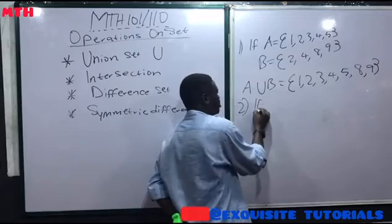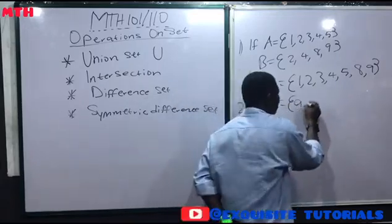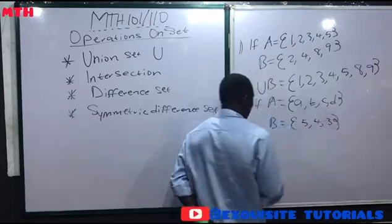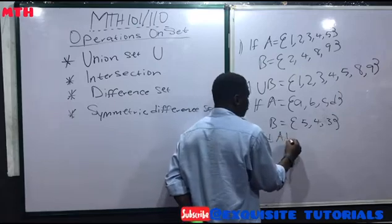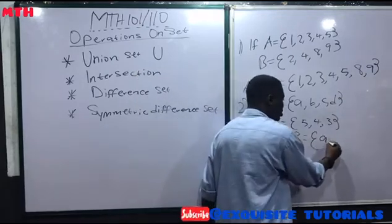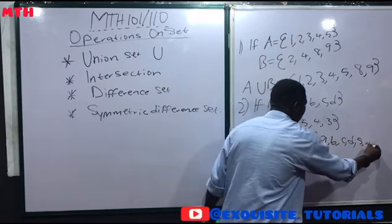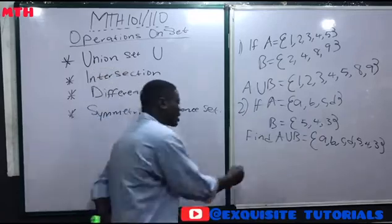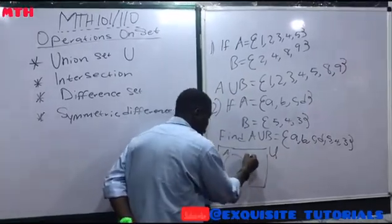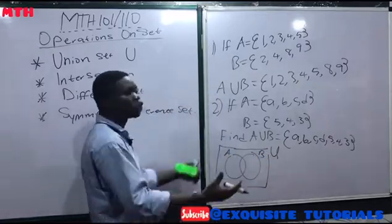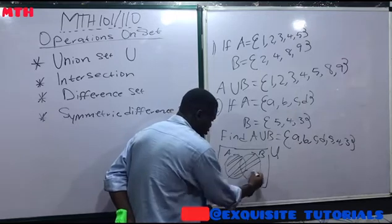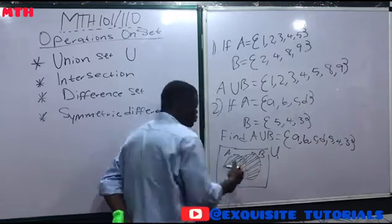Another example: if A = {a, b, c, d} and B = {5, 4, 3}, find A ∪ B. The union is adding all elements to make a new set. So A ∪ B = {a, b, c, d, 5, 4, 3}. In a Venn diagram, the union of two sets is represented by the fully shaded region of both circles inside the universal set — the entire shaded region represents A ∪ B.